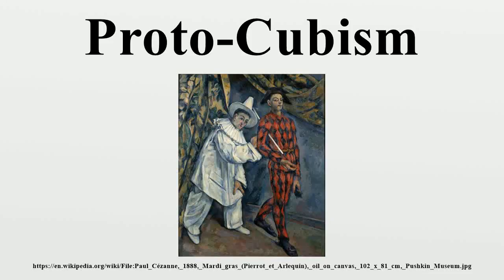Proto-cubism is an intermediary transition phase in the history of art, chronologically extending from 1906 to 1910. Evidence suggests that the production of proto-cubist paintings resulted from a wide-ranging series of experiments, circumstances, influences and conditions, rather than from one isolated static event, trajectory, artist or discourse. With its roots stemming from at least the late 19th century, this period can be characterized by a move towards the radical geometrization of form and a reduction or limitation of the color palette.